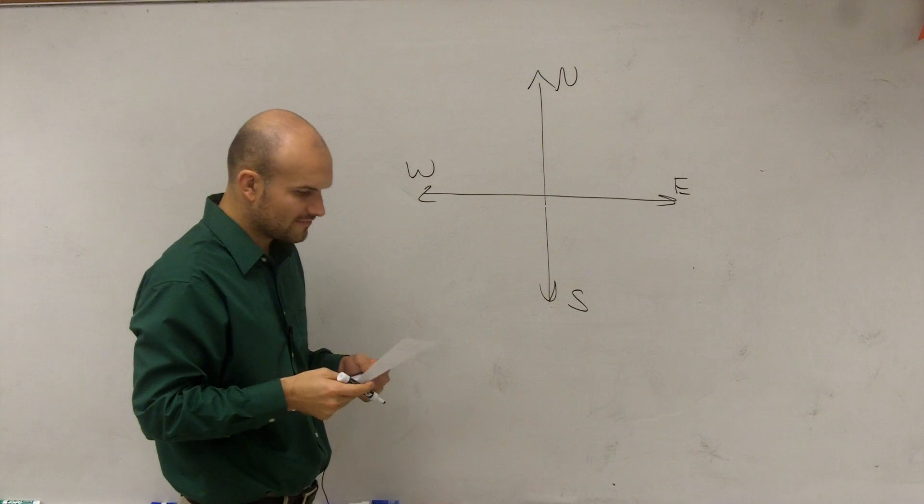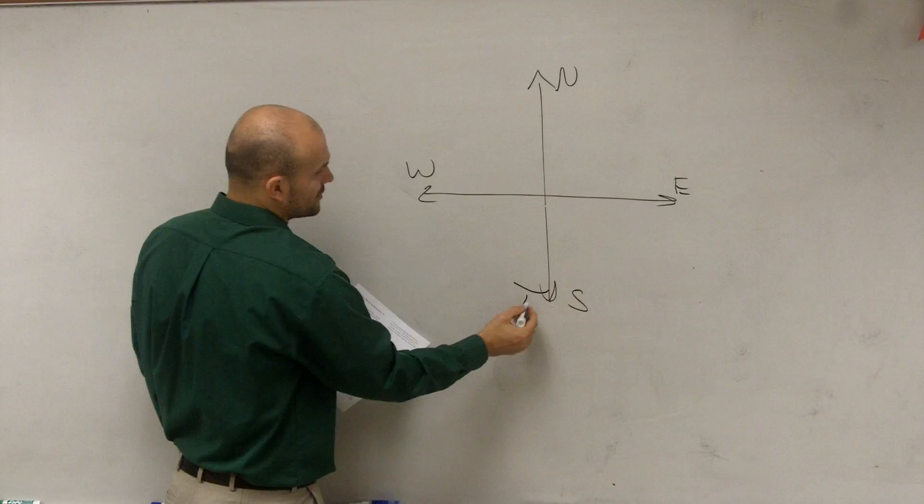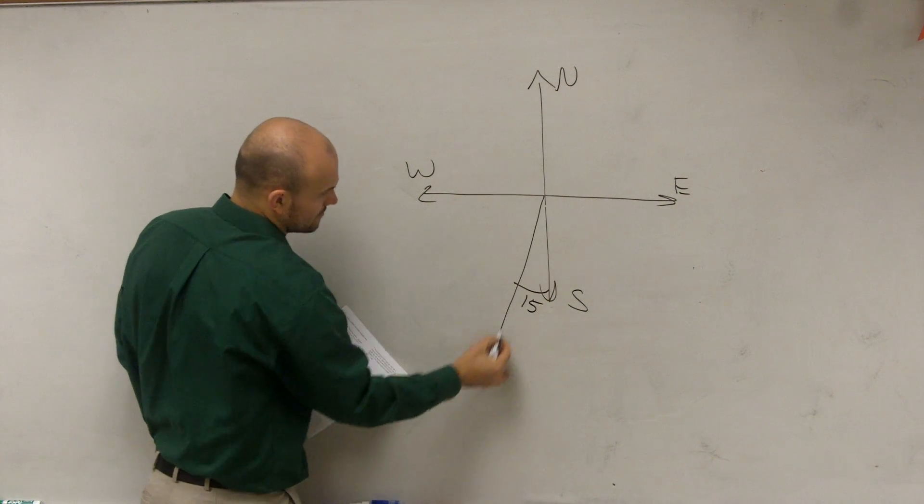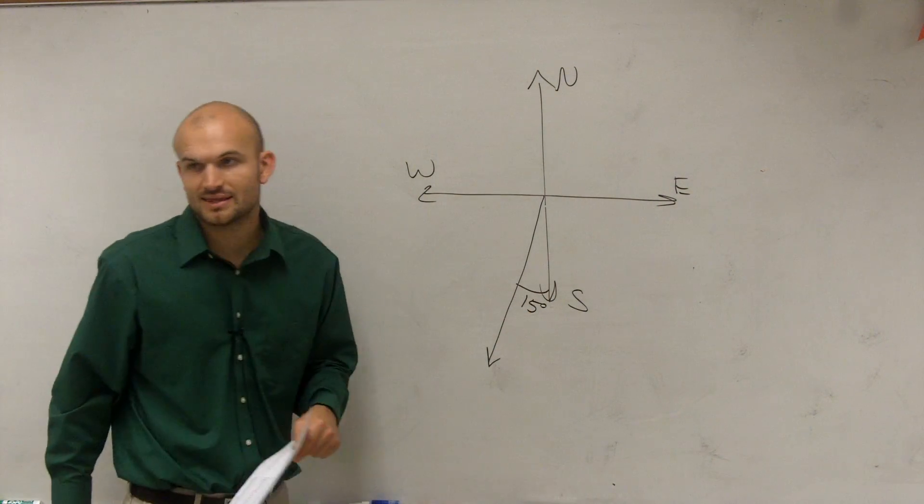So it's going 550 miles per hour with a bearing of south 15 degrees west. It's going to look something like that, right?